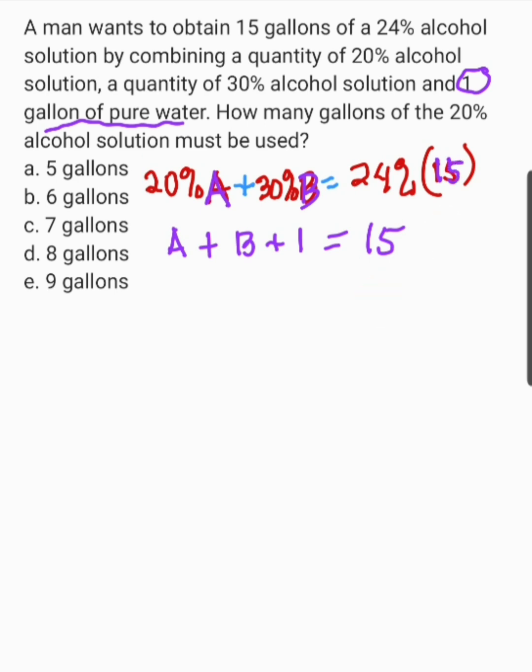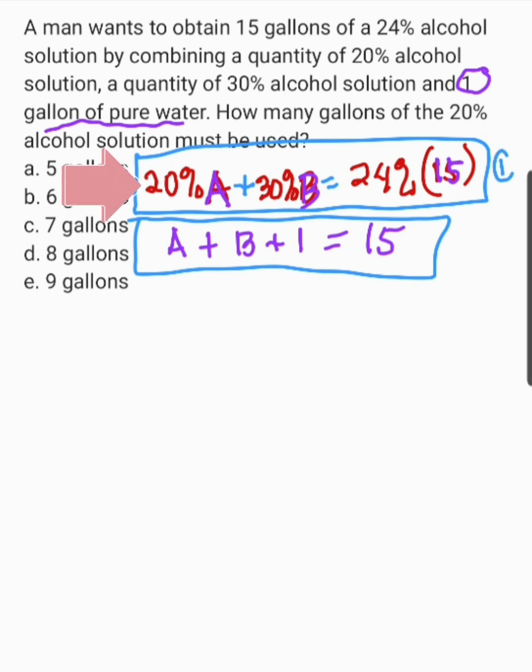Yang 15 na yan, total mixture. So, therefore, meron tayong equation number 1. Yan yung mga percentage sa alcohol. Equation number 2, ito naman yung regarding sa total mixture. Yung mismong number of gallons.